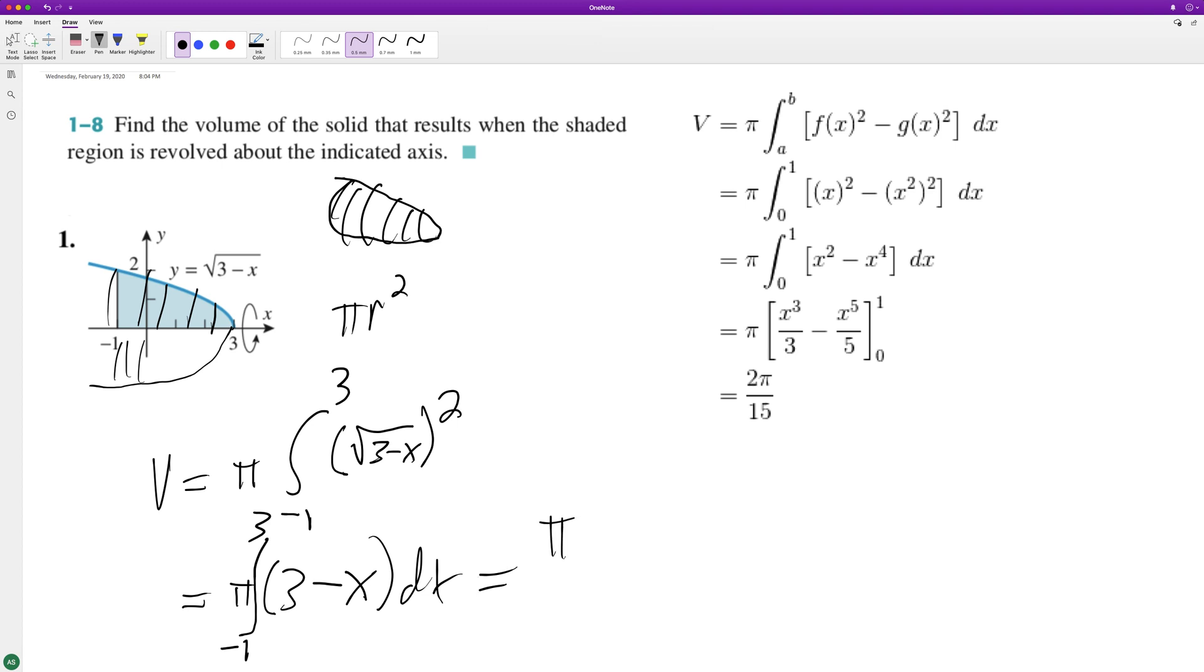So we get three x minus x squared over two, from negative one to three.